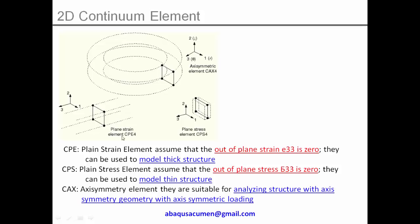For the plane strain element CPE4, you have X and Y in the 1 and 2 directions on the face, and the third dimension is very large. The plane strain element assumes that the out-of-plane strain epsilon_33 equals zero. You can use this element when modeling a thick structure — for example, a water dam, a large undersea pipe, or metal forming problems like sheet metal bending or channel formation, where the third dimension is so large compared to the cross section that strain in the third direction is effectively zero.